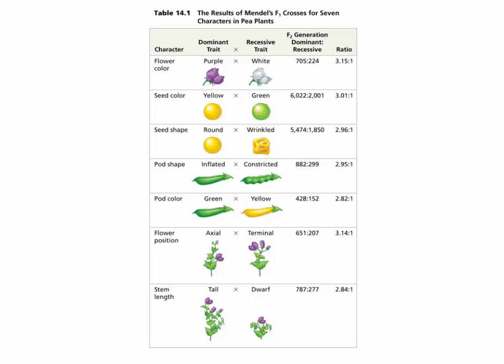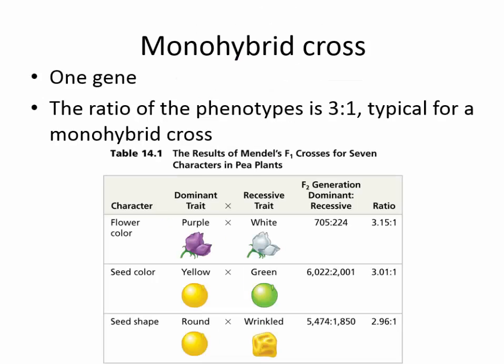These are all the traits that he looked at: purple and white flower color; seed color, yellow or green; seed shape, round or wrinkled; pod shape, inflated or constricted; pod color, green or yellow; flower position, axial or terminal; and stem length, tall or dwarf. In every single one he repeated this experiment, and in every single one he got a three-to-one ratio for the F2 generation — which was simply amazing. If you look at just one gene, you get the three-to-one ratio by crossing in the F2 generation.